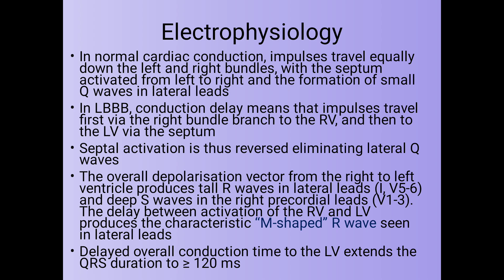The overall depolarization vector from the right to left ventricle produces a tall R wave in the lateral leads (lead 1, V5, V6) and a deep S wave in the right precordial leads (V1 and V3). The delay between activation of the right ventricle and left ventricle produces the characteristic M-shaped R wave seen in the lateral leads. Delayed overall conduction time to the left ventricle extends the QRS duration to more than or equal to 120 ms.